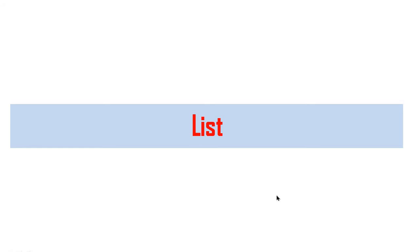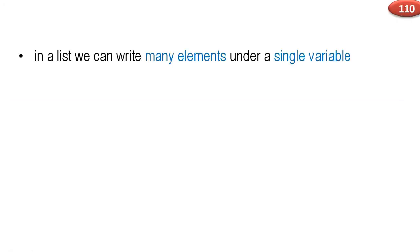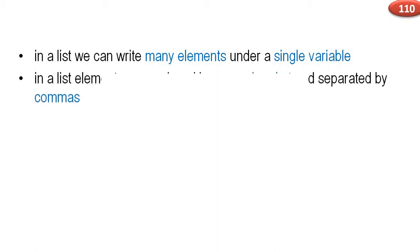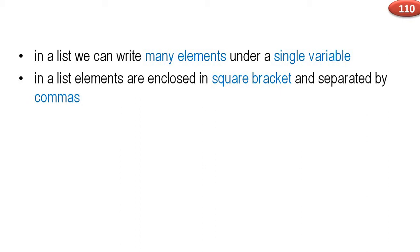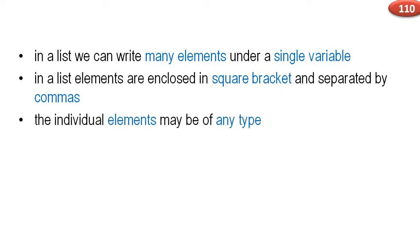List. In a list, we can write many elements under a single variable. The elements are enclosed in square brackets and separated by commas. The individual elements may be of any type.